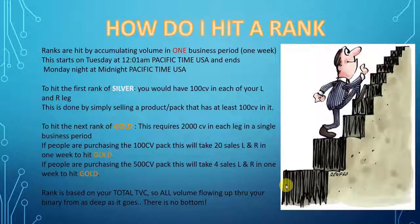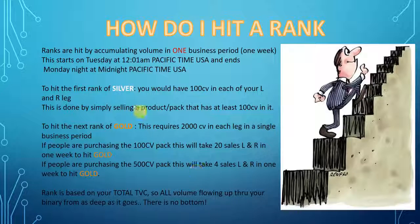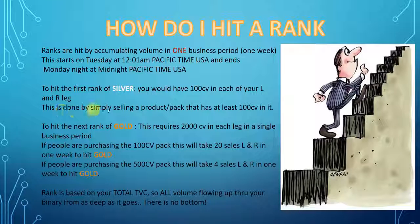How do you hit rank? In this company, ranks are hit by accumulating volume in one business period or one week. The business period starts at 12:01 a.m. Pacific time and ends on Monday night at midnight Pacific time. In order to hit silver, the first rank, all you would have to do is 100 CV in each of your left leg and your right leg in the same week. To get to gold, gold requires 2,000 CV in each leg in a single business period.